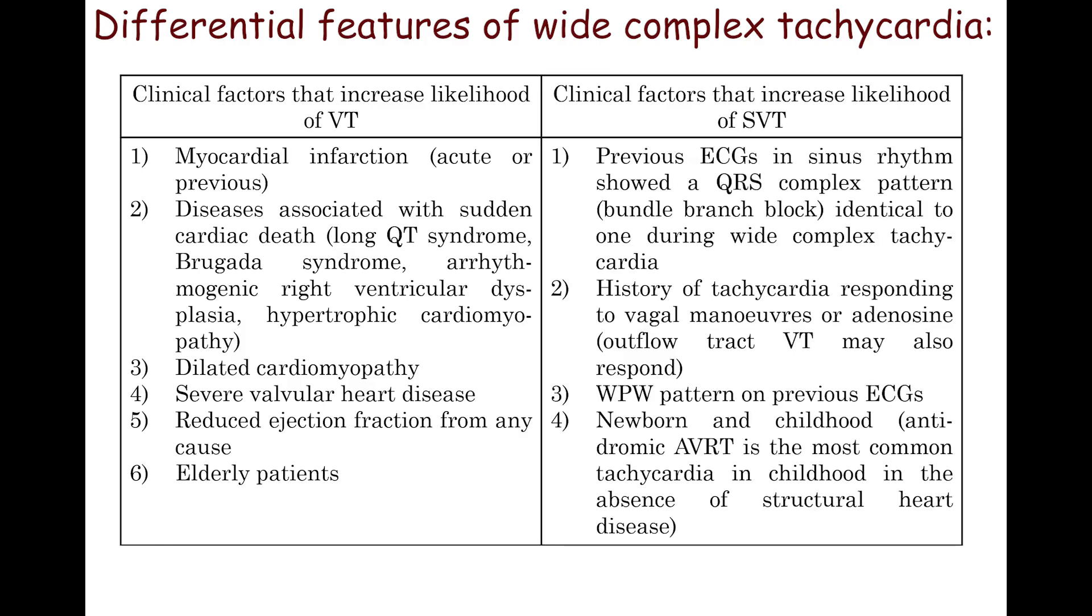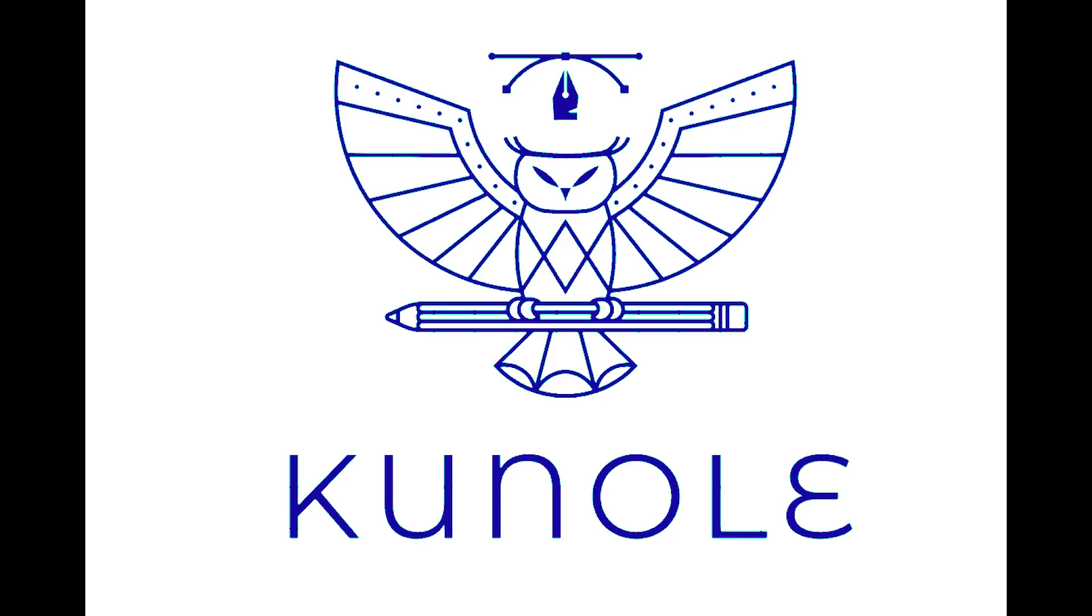Clinical factors that increase likelihood of supraventricular tachycardia include: previous ECGs in sinus rhythm showed a wide QRS complex with pattern identical to one during wide complex tachycardia, history of tachycardia responding to vagal maneuvers or adenosine, WPW pattern on previous ECGs, newborn and childhood. Antidromic atrioventricular re-entrant tachycardia is the most common tachycardia in childhood in the absence of structural heart disease. Thank you for watching this video. Please like and subscribe.